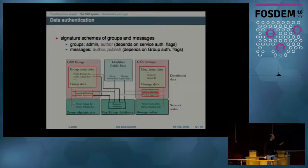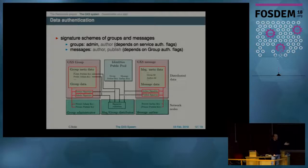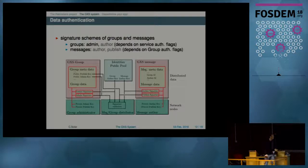Authentication works as follows. Groups and GXS messages come with signatures. Groups have an admin signature which controls everything, and optionally an author signature, though the group can be anonymous. GXS messages have an author signature if required by the group authentication policy, and they may also require a publisher signature to control that users have the right access to certain groups. All these signatures are checked by every user in the network when distributing the data.